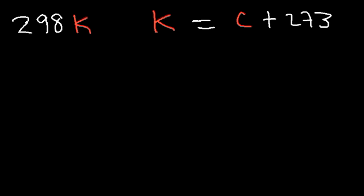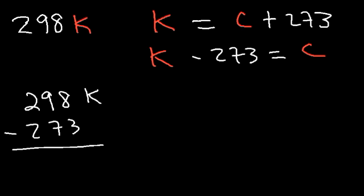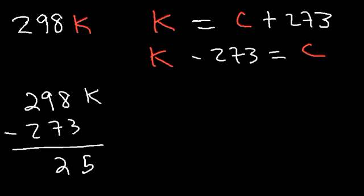Now let's work backwards. If we have a temperature of 298 Kelvin, how do we convert it to Celsius and then to Fahrenheit? Using the equation K = C + 273, solving for Celsius gives C = K minus 273. So subtract 273 from 298: 298 minus 273 is 25 degrees Celsius, which equals 298 Kelvin.